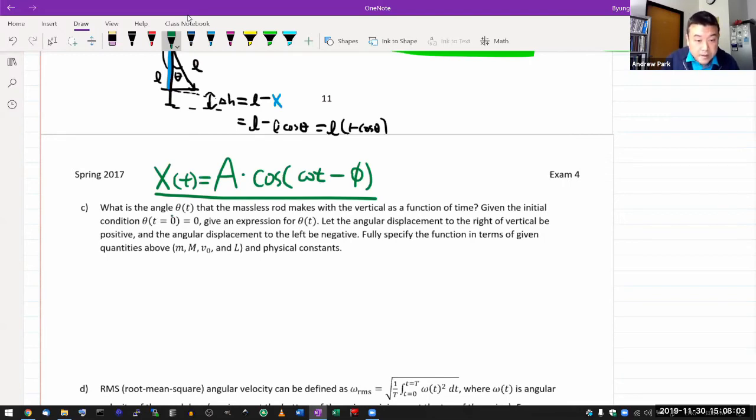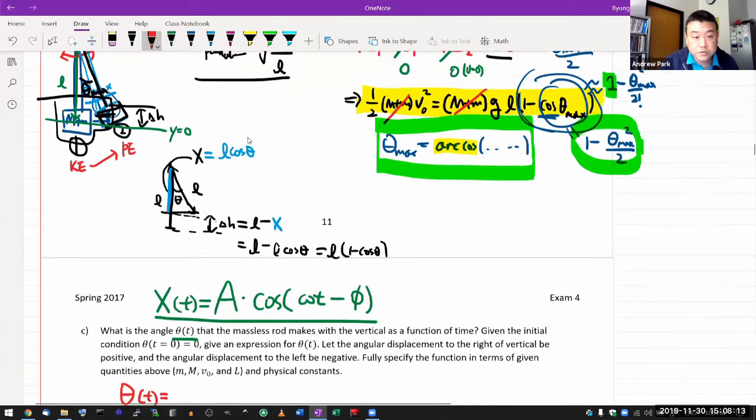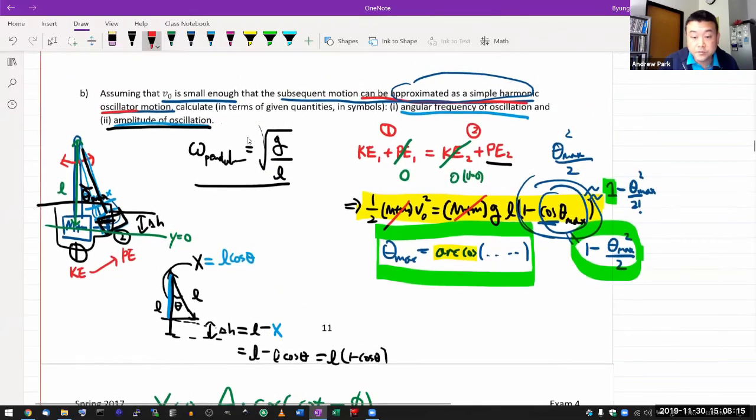and what you are asked to do in this question is basically apply this to this setup. So you are looking at theta of t. So let's, I guess, write that down. So theta is a function of time and the amplitude. I could just use the expression for amplitude that I wrote down here. So I'll just use that.